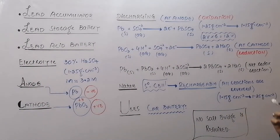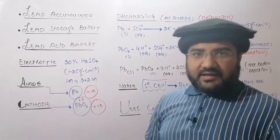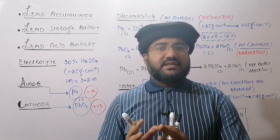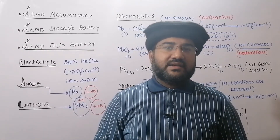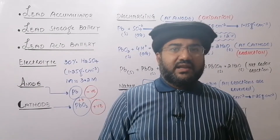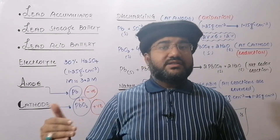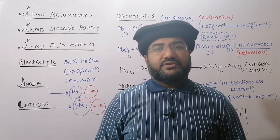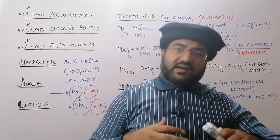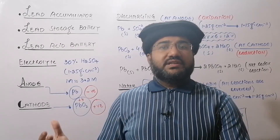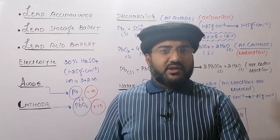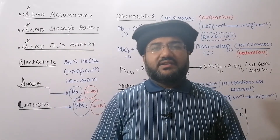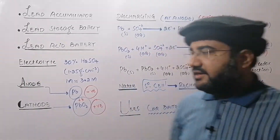One lead acid cell can produce 2 volts. A battery made of 3 lead acid cells connected in series produces 6 volts, and a battery of 6 lead acid cells connected in series produces 12 volts. In cars, either a 3-cell lead storage battery (6V) or a 6-cell lead storage battery (12V) is used, depending on the voltage requirement.